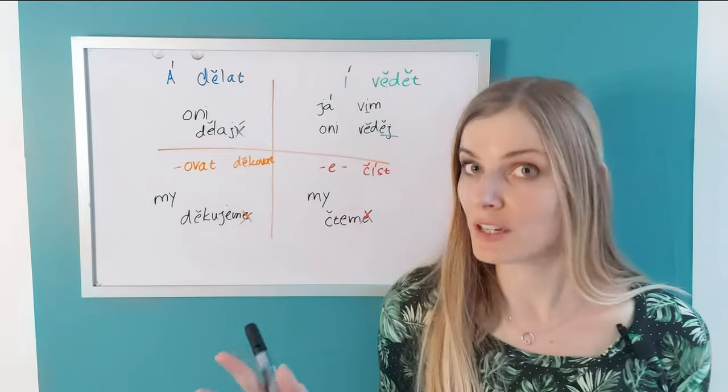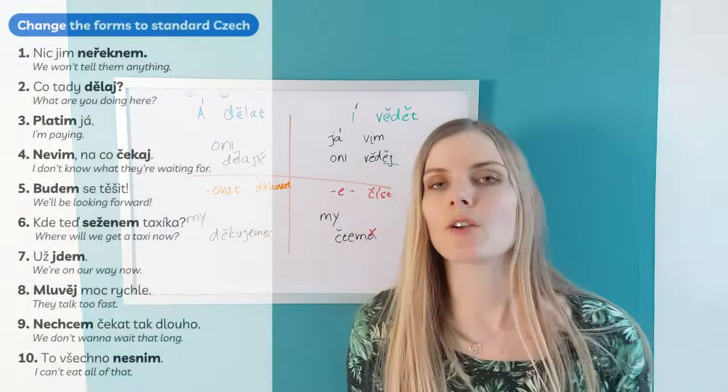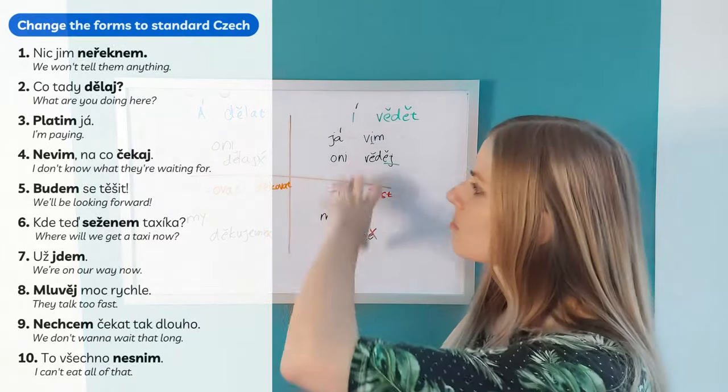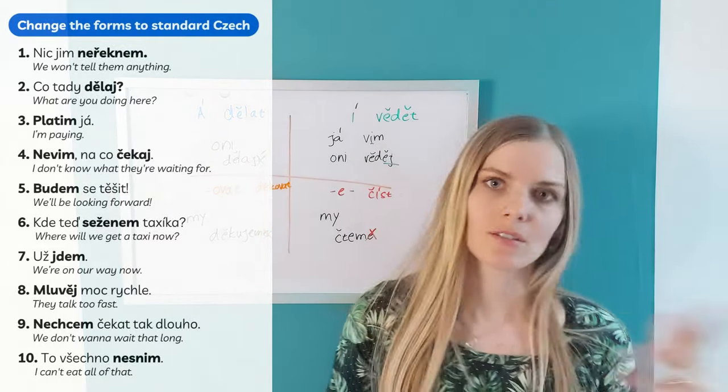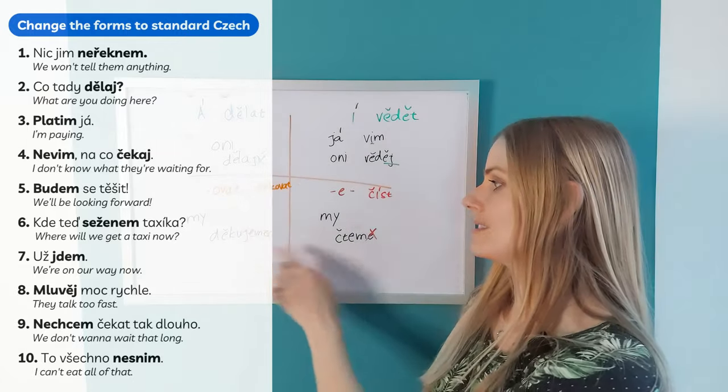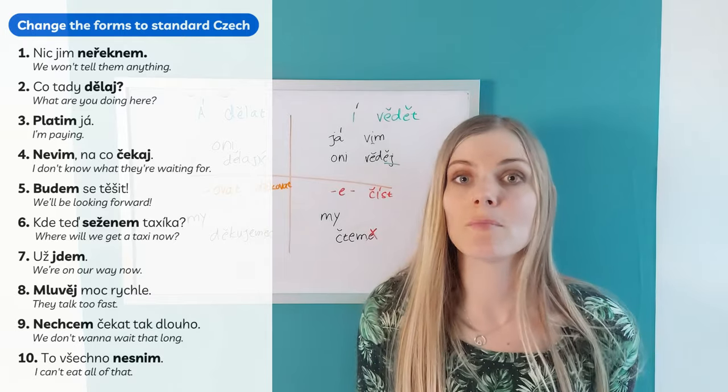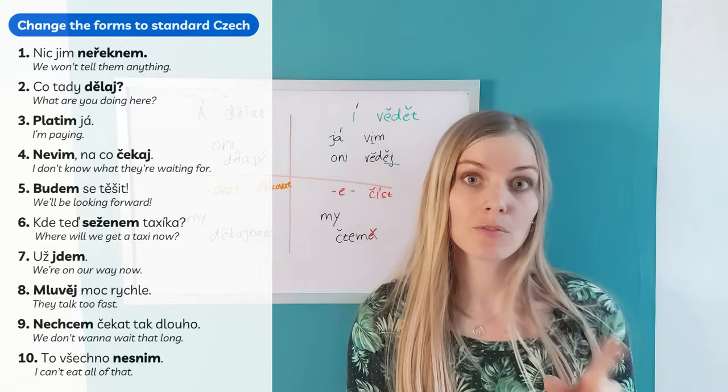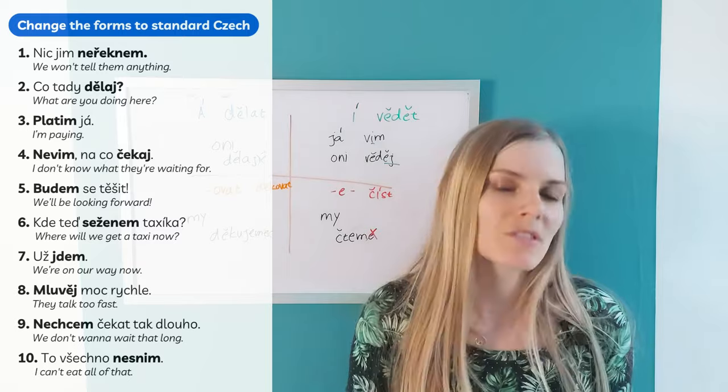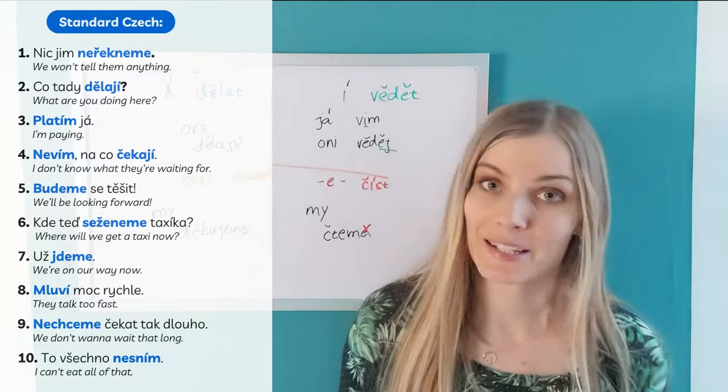Let's practice with a quick exercise. You are going to see sentences that are already in the common Czech. You have a mixture of present tense and future tense. Every sentence contains forms like these. And I want you to take a look at it and replace them by the proper forms. By the forms in the standard Czech. Pause the video and work on it. And the correct results are here. Well done.